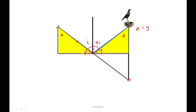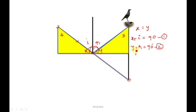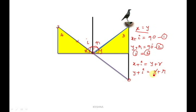Since X equals Y, the total angle on each side is 90 degrees. So, X plus I equals 90 (equation one), and Y plus R equals 90 (equation two). Setting equation one equal to equation two: X plus I equals Y plus R. Since X equals Y, substituting gives Y plus I equals Y plus R. Cancelling Y from both sides, we get I equals R. Therefore, angle I equals angle R — this is the first law of reflection, and it is proved.